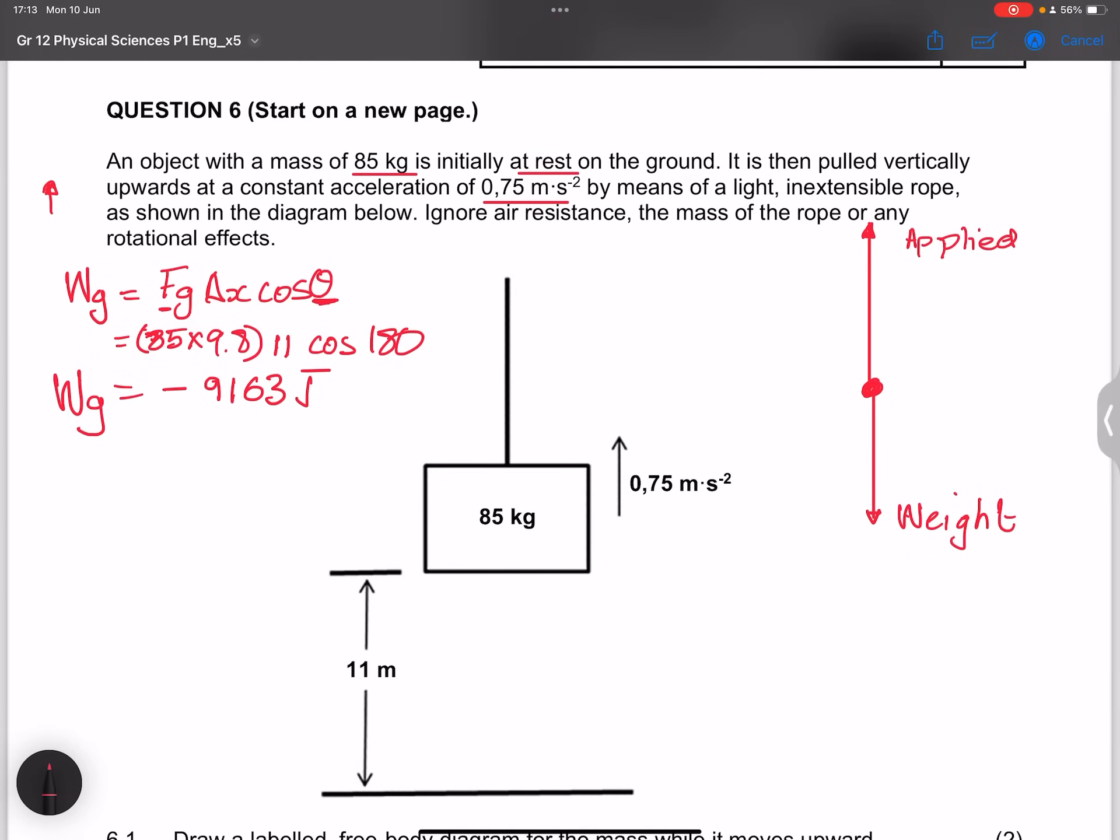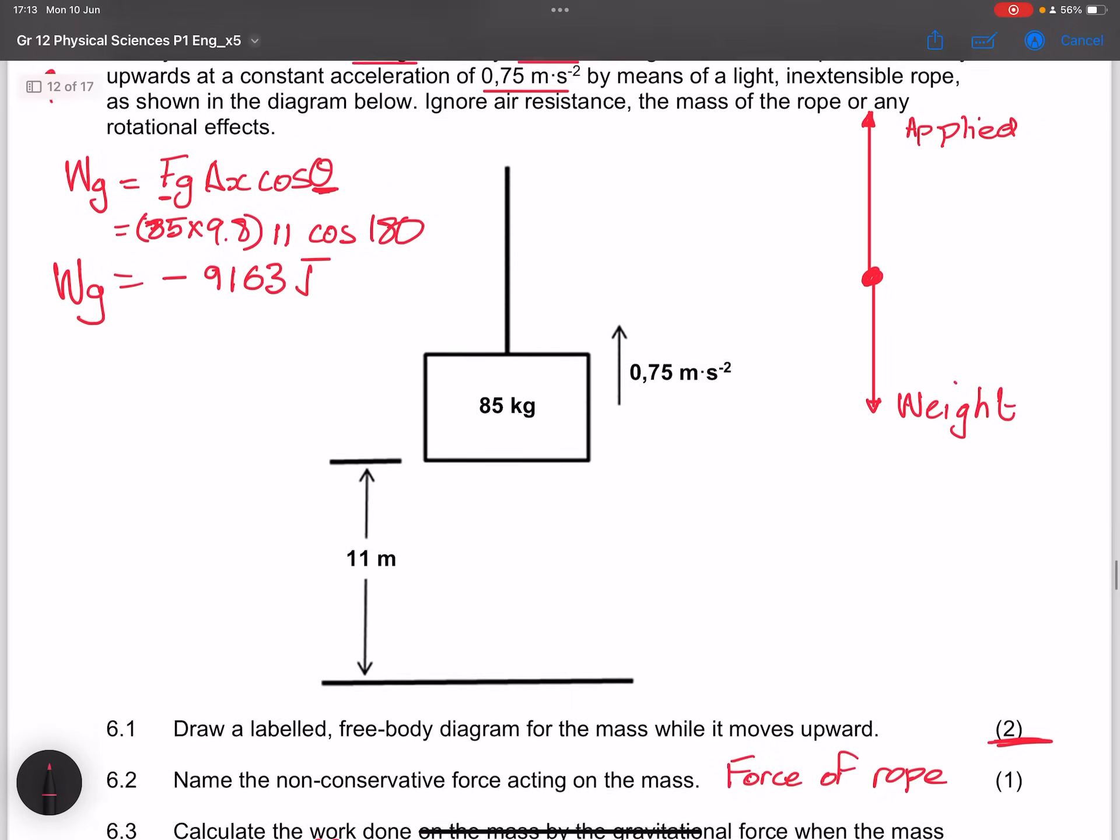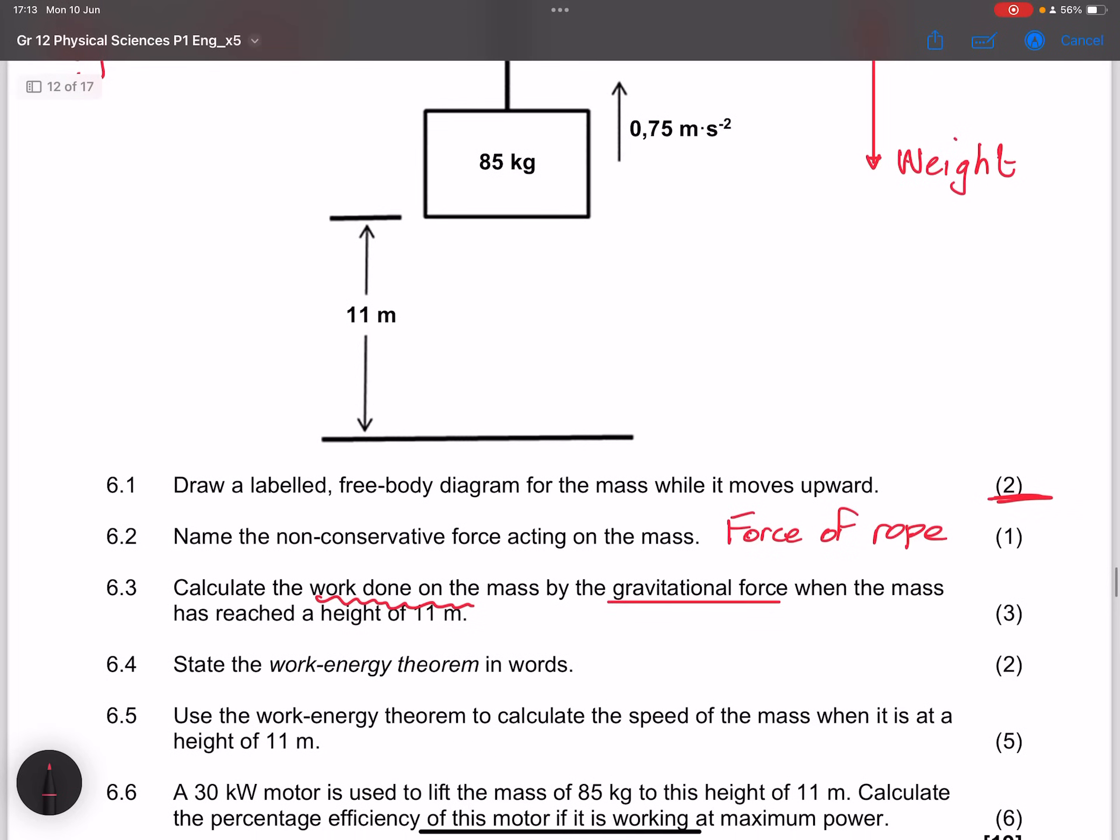Now they say to us state the work energy theorem in words. So remember we say that the net work done on an object is equal to the change in kinetic energy. I always like writing it down because what you see is essentially what you get in terms of this definition.